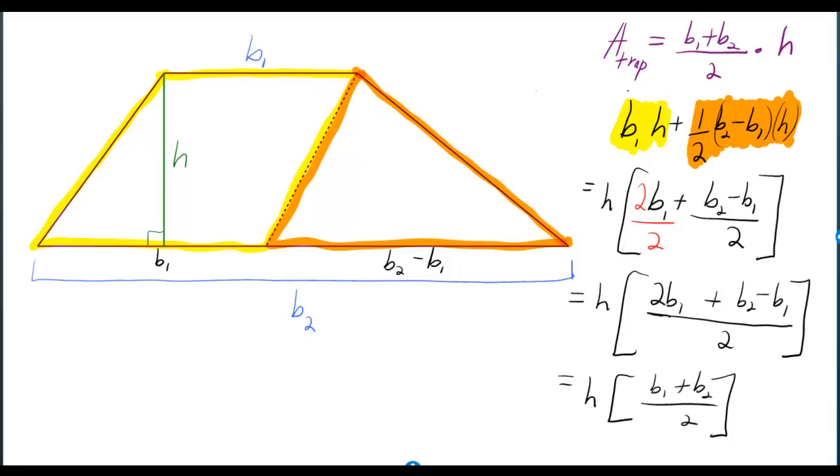But to see why, the parallelogram that's highlighted in yellow would just have area B1H. But the triangle would have B2 minus B1 for its base. Why? Because the entire trapezoid's base two is made up of base one plus an extra bit.